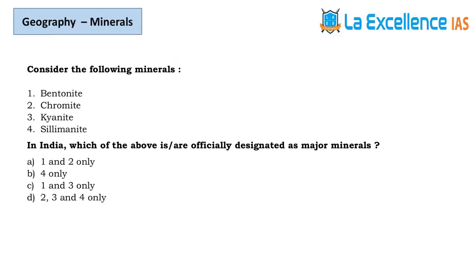The next question is about officially designated major minerals. Bentonite is not a major mineral — it is a minor mineral. Eliminating that option leaves statements 2, 3, and 4. Chromite is most commonly used in electrical circuits and similar applications, so when statement 2 is right, automatically D is the answer.